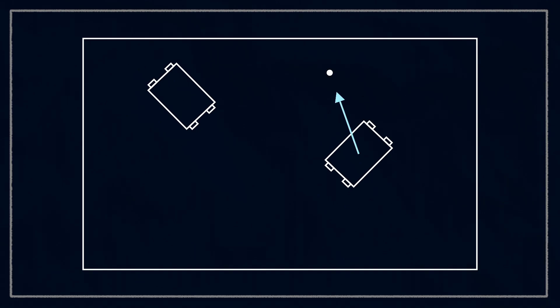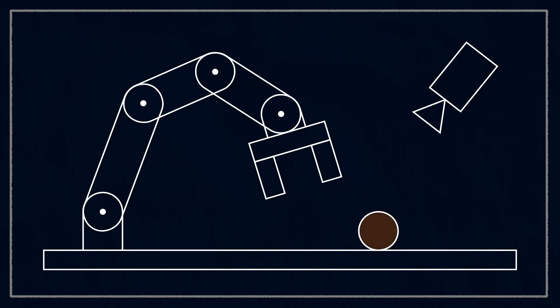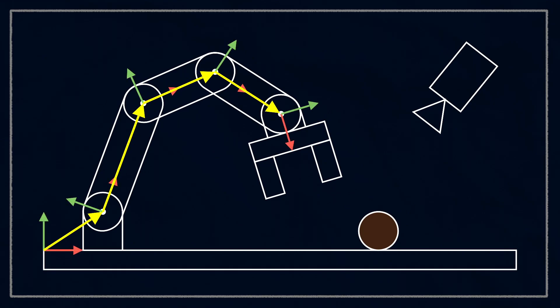For us to program this behavior though, we need a way to describe the position and orientation of the robot and other things around it. If you've ever tried to do this from scratch, you probably realize that once you have more than a couple of moving parts or you're working in 3D, it becomes really messy.